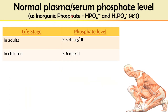The normal plasma or serum phosphate level in adults is 2.5–4 mg/dL, and slightly higher in children at 5–6 mg/dL. The estimated value is the total inorganic phosphate — both monohydrogen phosphate and dihydrogen phosphate — which exist in a ratio of 4:1. Differentiation between these two forms is difficult, so total inorganic phosphate level is estimated in the diagnostic lab.